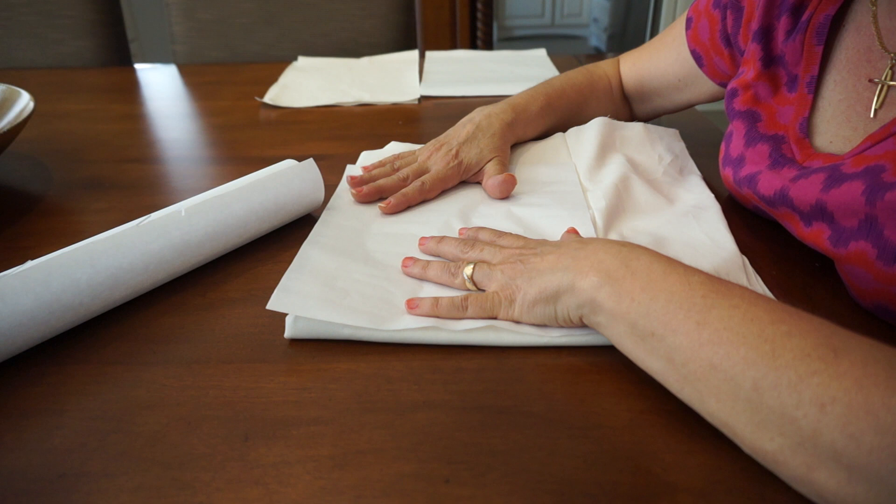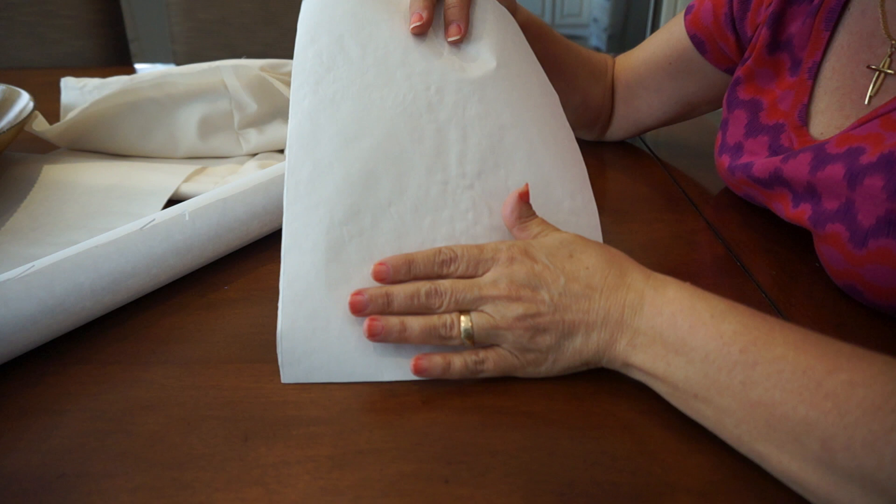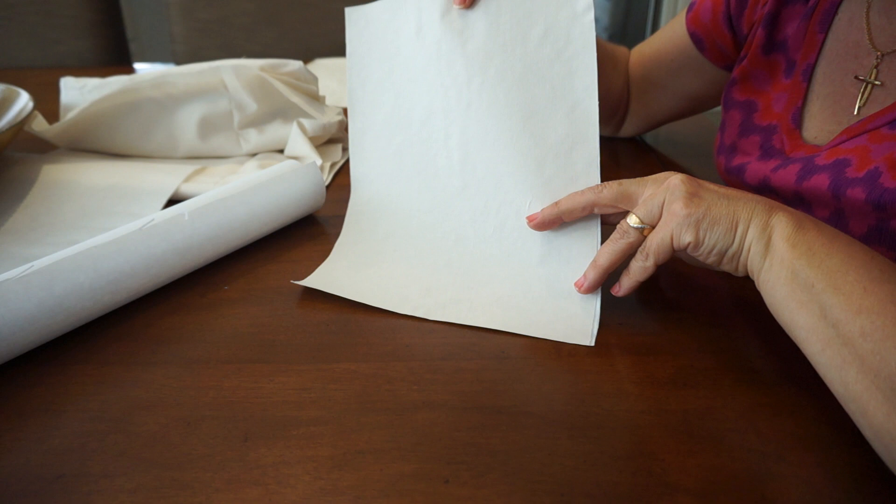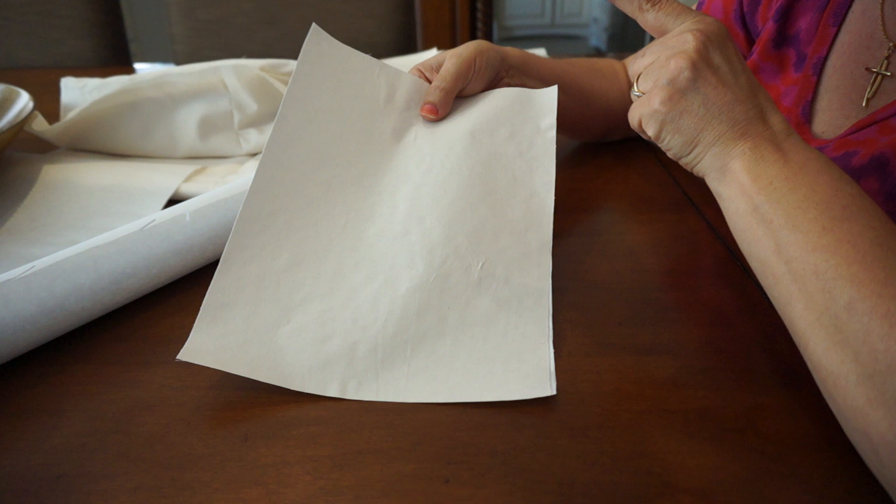Once you press that on, it will actually look like this. There's your fabric, there's the flat side of the freezer paper, and now you have an eight and a half by eleven sheet that you can actually just feed into your printer, and you will get the image transferred right onto the fabric.